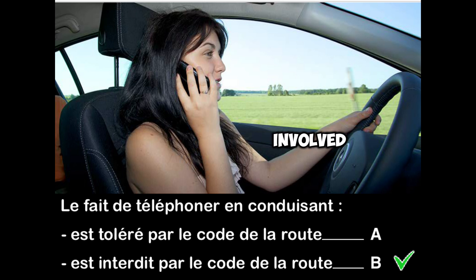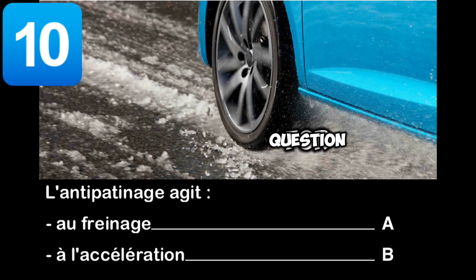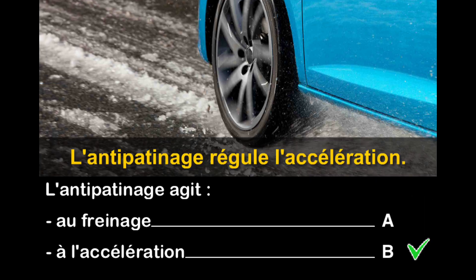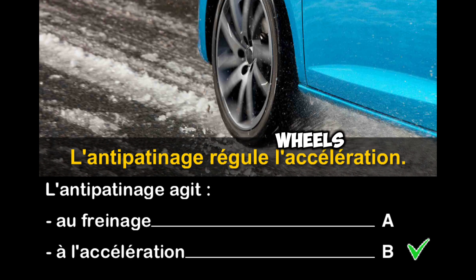Question ten: the traction control works — when braking, or at acceleration? The traction control regulates acceleration to limit the loss of grip of the drive wheels. It briefly slows down the rotation of the spinning wheels until adhesion is resumed.